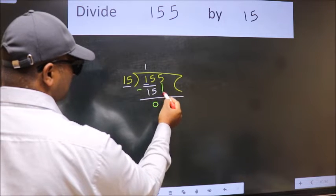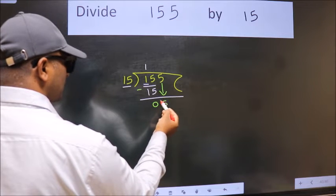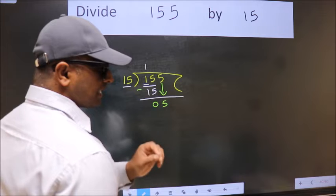After this, bring down the beside number. So 5 down. After this step, the mistake happens. And the mistake is this.